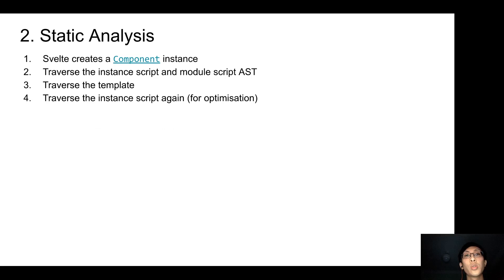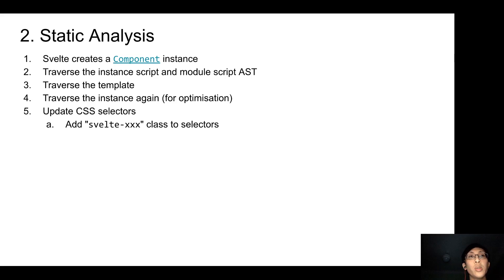After that, Svelte traverses through the instance script again. This time round is mainly for optimization, such as determining which variables or functions can be safely hoisted, as well as determine which reactive declaration does not have to be reactive, because of not being referenced inside the template. Now, Svelte will also go to update the CSS selectors, making sure that they are component scoped, and also warn for any unused selectors. Here is where you can read more about the component class.